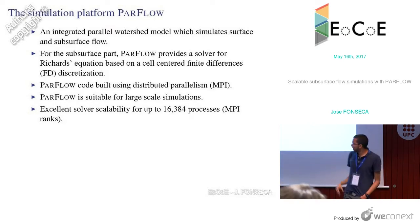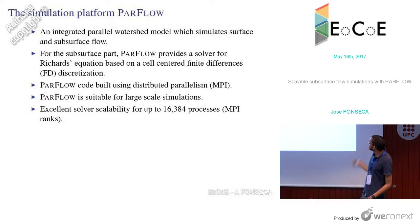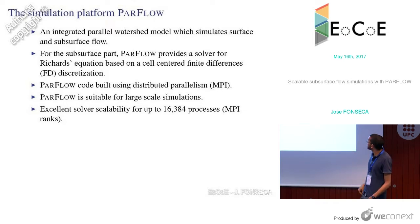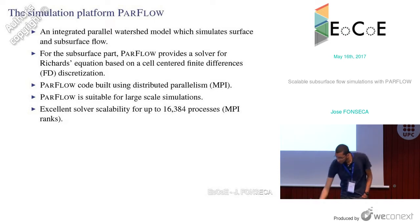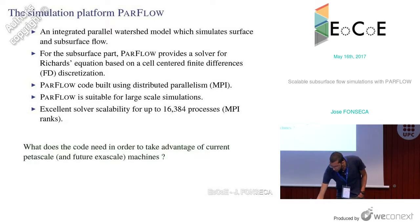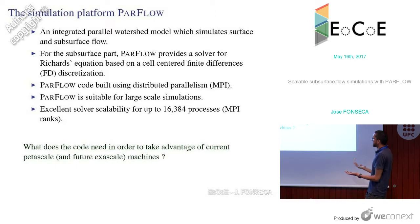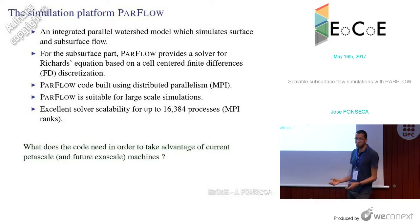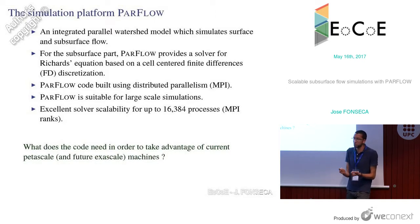You might ask: 16,000 processes is a really modest number for today's supercomputers. So the question becomes: what does the code need in order to take advantage of current machines, or even what do we need to do with the code to think about running on future ones?